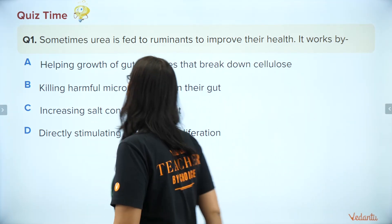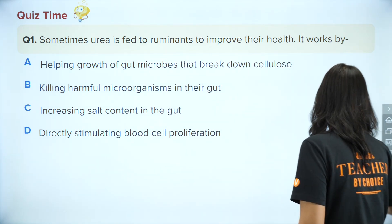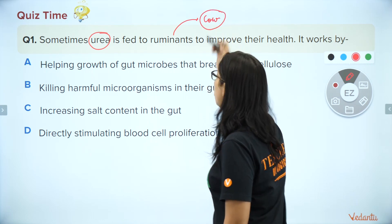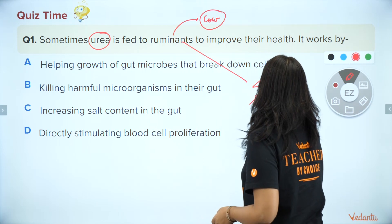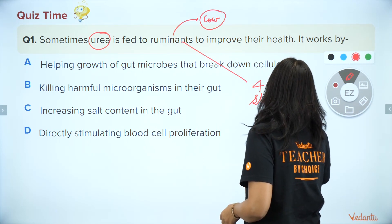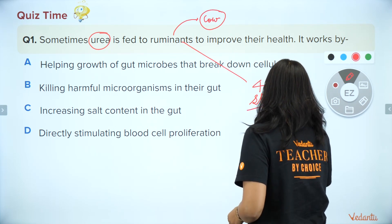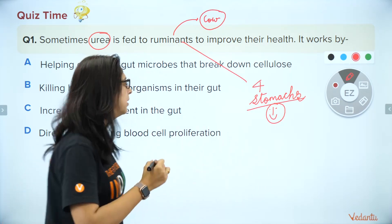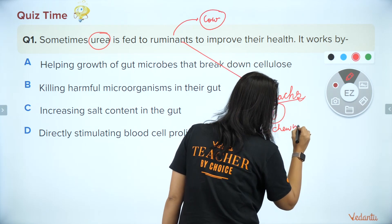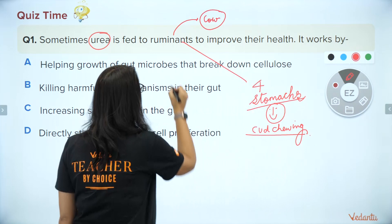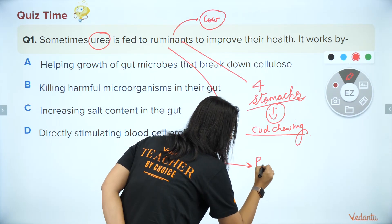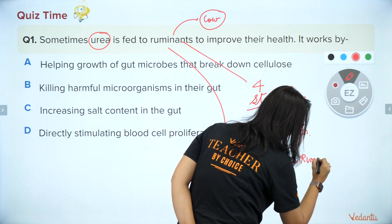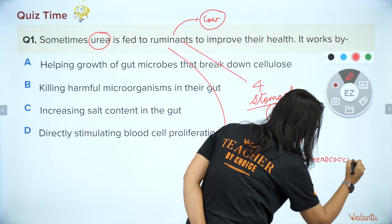Sometimes urea is fed to ruminants — so what is being fed? Urea. Ruminants are organisms like cows which have four stomachs. Organisms who have multiple stomachs are referred to as ruminants. Rumen, reticulum, omasum, abomasum — these are the names of the stomachs. You can also call them cud-chewing animals. An important point: all cud-chewing animals, i.e., ruminants, have a bacteria by the name of Ruminococcus living in that part of their stomach.